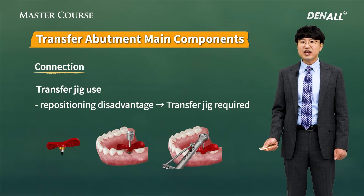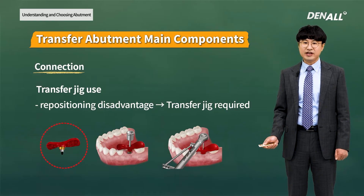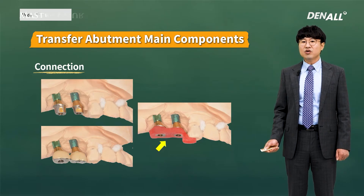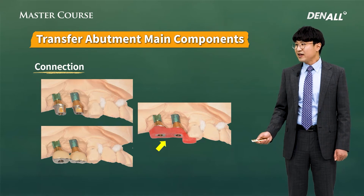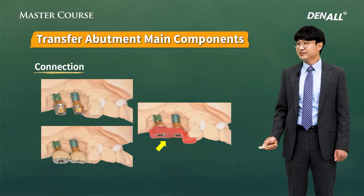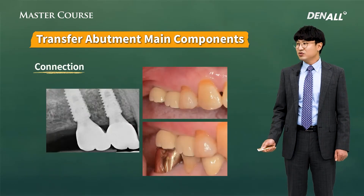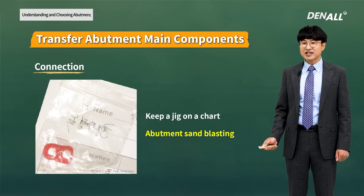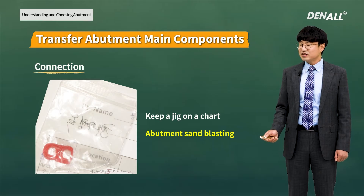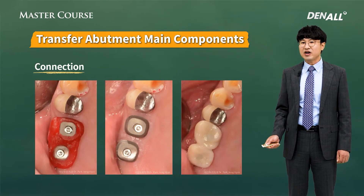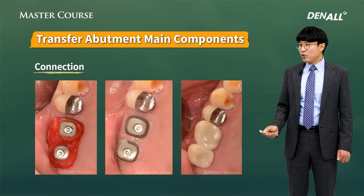For the non-hex type, a transfer jig is necessary to reproduce the locations. The red structure here is the jig. For a non-hex abutment, to transfer the locations from the model to the mouth, the transfer jig is necessary. Through the transfer jig, the locations on the model are transferred to the mouth and the final prosthesis is completed. I keep the transfer jigs in charts like this — otherwise they will accumulate and it will be hard to find for specific individuals. It is retained so that later, if necessary, the transfer jig can be used to reposition the abutment.